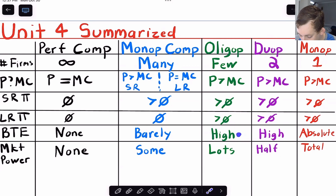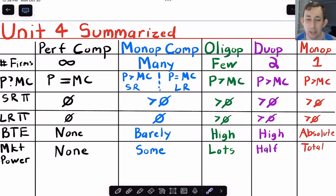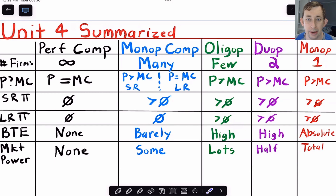For oligopoly, for instance the plane-making industry, there are a lot of barriers to entry — you need a lot of resources to enter the market for making planes. Same for a duopoly. Monopoly is absolute — you can't get in. There's only one firm and they are really good at keeping other firms out. They completely dominate the market.